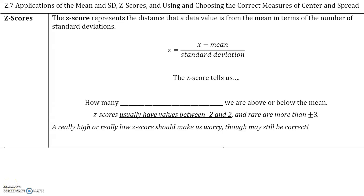In section 2.7, we will start talking about z-score and we will talk about this more in detail in future sections. The z-score represents the distance that our data value is from the mean in terms of the number of standard deviations. In other words, the z-score represents how many standard deviations above or below the mean a data value is.